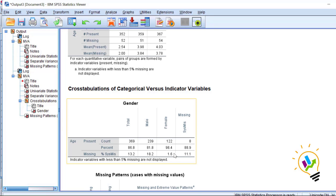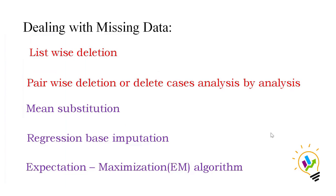Now let's discuss how to deal with missing data values. There are five methods for dealing with missing data. The first two, shown in red, are deletion methods. In deletion methods we delete the missing cases from the analysis. The first is Listwise Deletion — all missing values from the total dataset are deleted regardless of which test you perform. This is a very simple method.